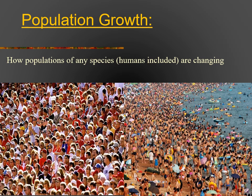Hi guys, it's Mr. Y. Today we're going to be talking about population ecology, specifically population growth and how many different species grow with certain similarities in the trends of their growth. This would also include humans and how those trends play out and why they play out the way they do.